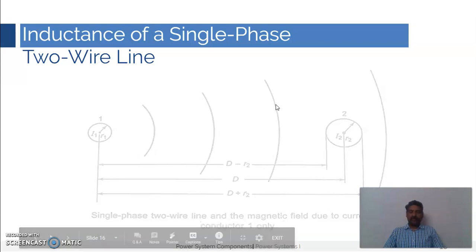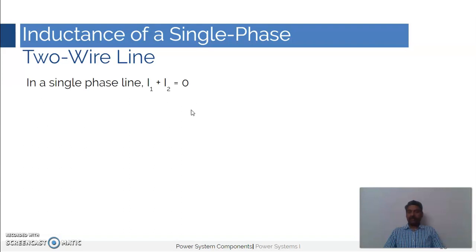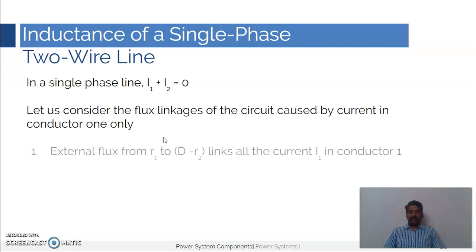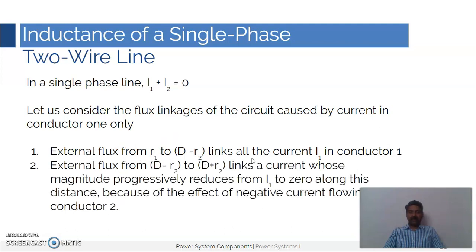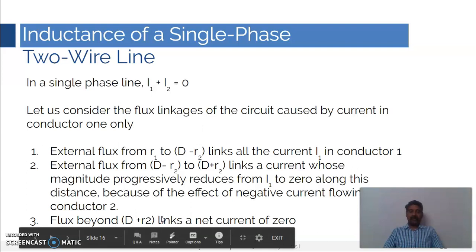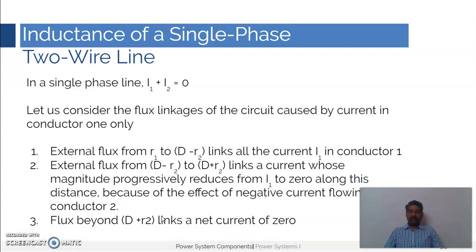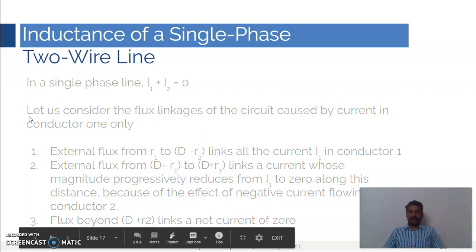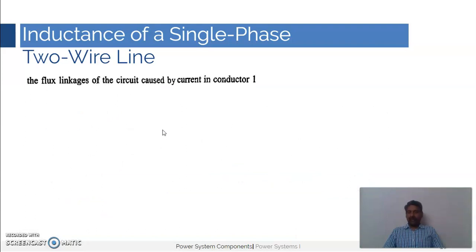In a single-phase line, i1 plus i2 is zero. The external flux from r1 to d minus r2 links all the current i1 in conductor one. The external flux from d minus r2 to d plus r2 links a current whose magnitude progressively reduces from i1 to zero along this distance, because of the negative current flowing in conductor two. The flux beyond d plus r2 links a net current of zero, since i1 plus i2 is zero.